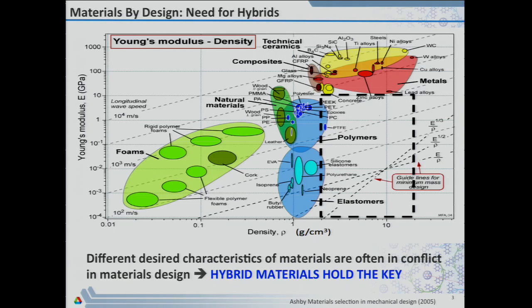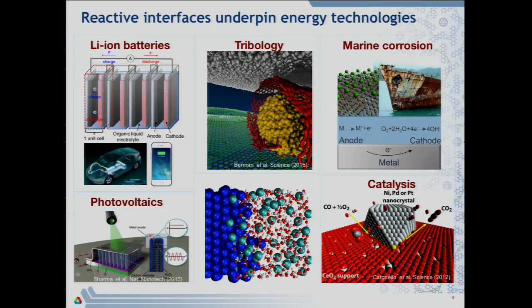There are many applications. For instance, Young's modulus versus electrical conductivity — if you're interested in flexible electronics, you want a material that is very flexible and soft, but also electrically conductive. Again, if you try to look at the kind of materials that can populate that landscape, you'll find very few. One has to resort to hybrid materials to get new materials that can actually populate that landscape.